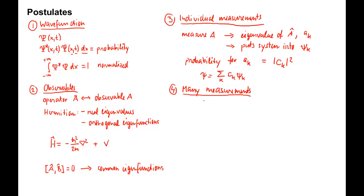The average of many measurements of an observable A on a series of identical quantum systems is given by the expectation value A bracket. It equals the integral from minus infinity to plus infinity of psi star A hat operating on psi dx.